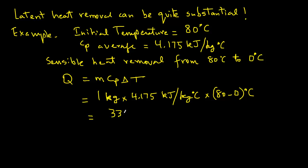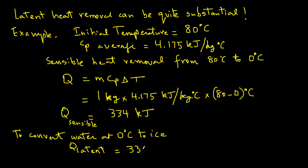That is the sensible heat removed for lowering temperature of water from 80 degree C to 0 degree C. To convert water at 0 degree C to ice, the latent heat removal equals 333.7 kilojoules. We see that both the heat values are similar, sensible heat and latent heat.